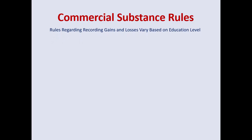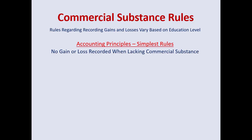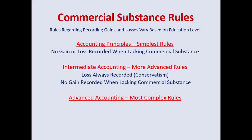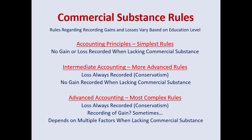Rules regarding gains and losses vary based on your education level. In accounting principles, the simplest rules are presented where absolutely no gains or losses are recorded if it lacks commercial substance. In intermediate accounting, we reintroduce more advanced rules where a loss is always recorded based on the rules of conservatism, but no gain when lacking commercial substance. The actual full rules are a little more complicated — that's studied in advanced accounting. A loss is always recorded, but what about the gain? It depends on multiple factors, and that's what will be presented here.